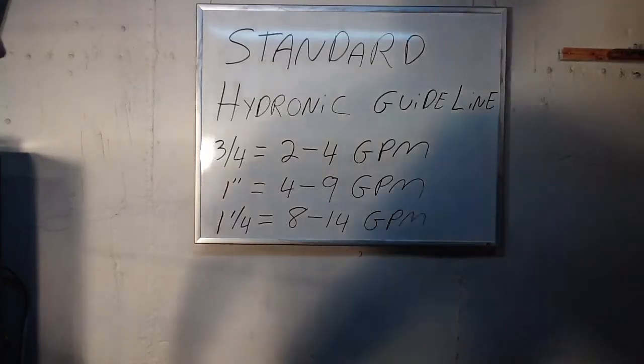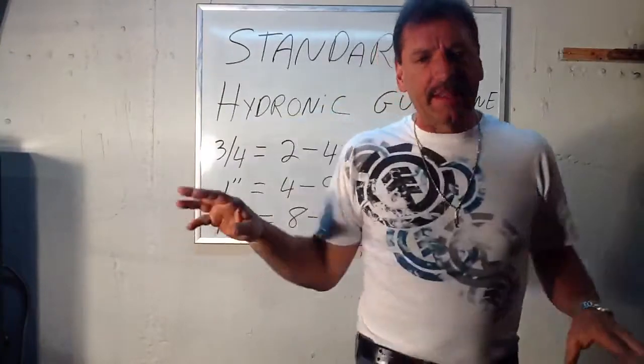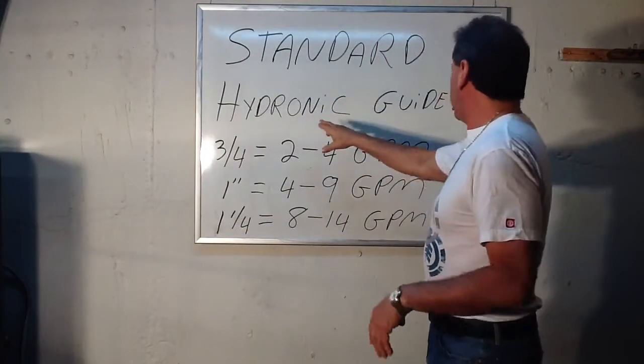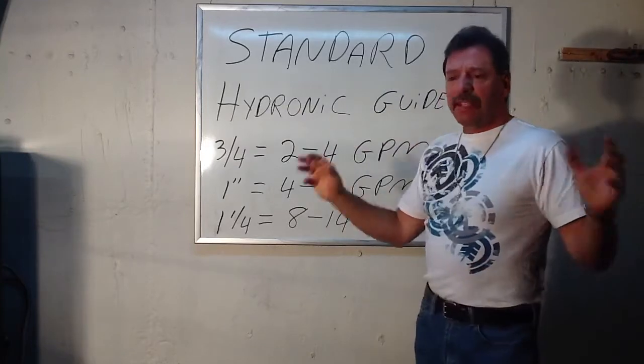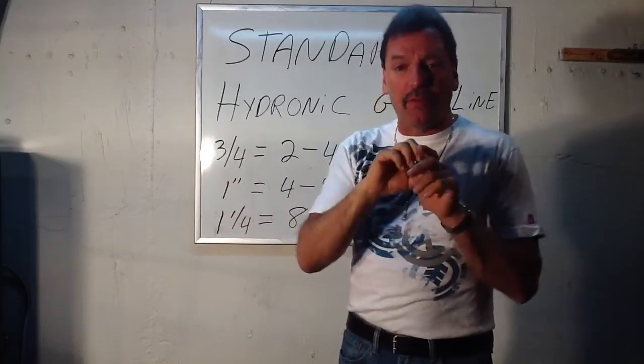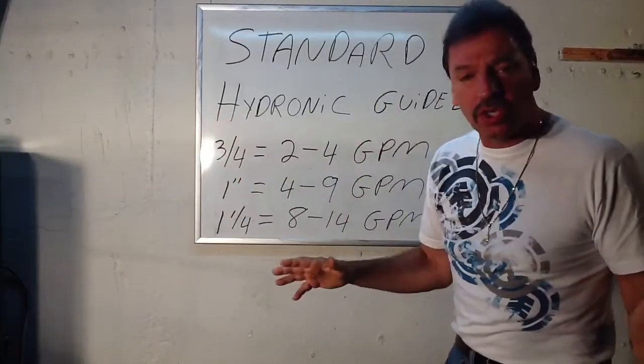By the way, guys, with that math, there's one more thing that I'd like you to know. There's a chart called Standard Hydronic Guidelines. And basically what that is, it gives you an amount of water that's possible to flow through the copper pipes that you're using on your zones.